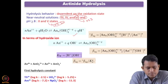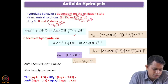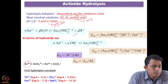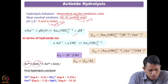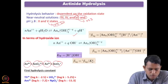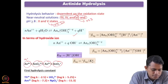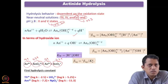We also compared the hydrolysis constants of different actinial ions across different oxidation states. The trend is: tetravalent has the highest tendency, followed by hexavalent, then trivalent, and then pentavalent — which corresponds to their charges of 4+, 2.3+, 3+, and 2.2+, respectively.